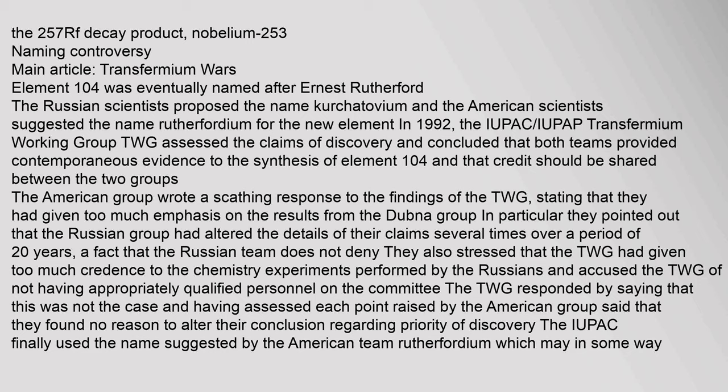Naming controversy: Element 104 was eventually named after Ernest Rutherford. The Russian scientists proposed the name Kurchatovium and the American scientists suggested the name Rutherfordium for the new element. In 1992, the IUPAC–IUPAP Transfermium Working Group (TWG) assessed the claims of discovery and concluded that both teams provided contemporaneous evidence to the synthesis of element 104 and that credit should be shared between the two groups. The American group wrote a scathing response to the findings of the TWG, stating that they had given too much emphasis on the results from the Dubna group.